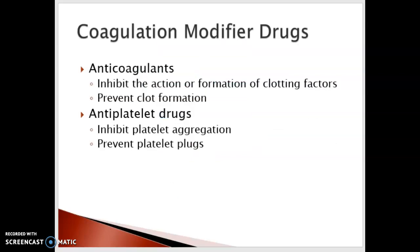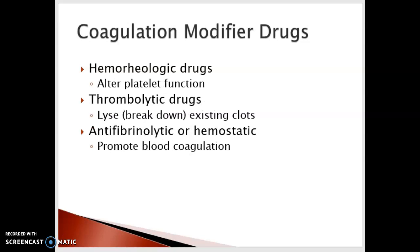The coagulation modifier drugs are divided into two big categories: anticoagulants, which inhibit the action or formation of clotting factors and prevent clot formation; and antiplatelet drugs, which inhibit platelet aggregation and prevent platelet plugs from occurring. We also have hemorrhagic drugs that alter platelet function, thrombolytic drugs that actually lyse or break down existing clots, and antifibrinolytic or hemostatic drugs that promote blood coagulation in patients with disorders like hemophilia.